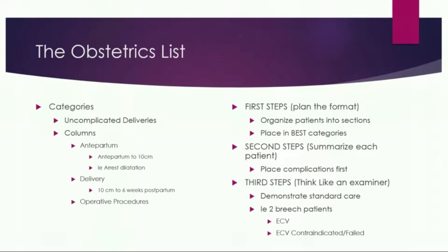The next thing to know for the obstetric case list is there are different columns. The first column is the antepartum column. The next column is the delivery column. And then the column after that is operative procedures. A lot of times people confuse the antepartum and the delivery column. The most important thing to know is the antepartum column is anything antepartum up to 10 centimeters.